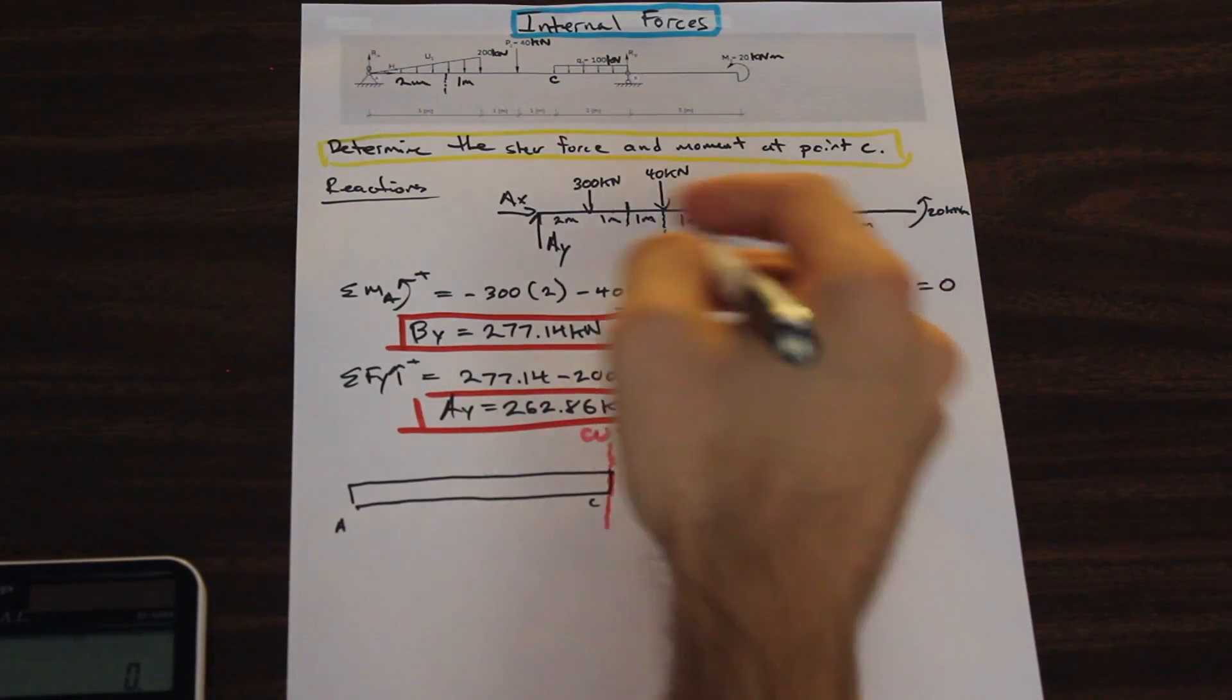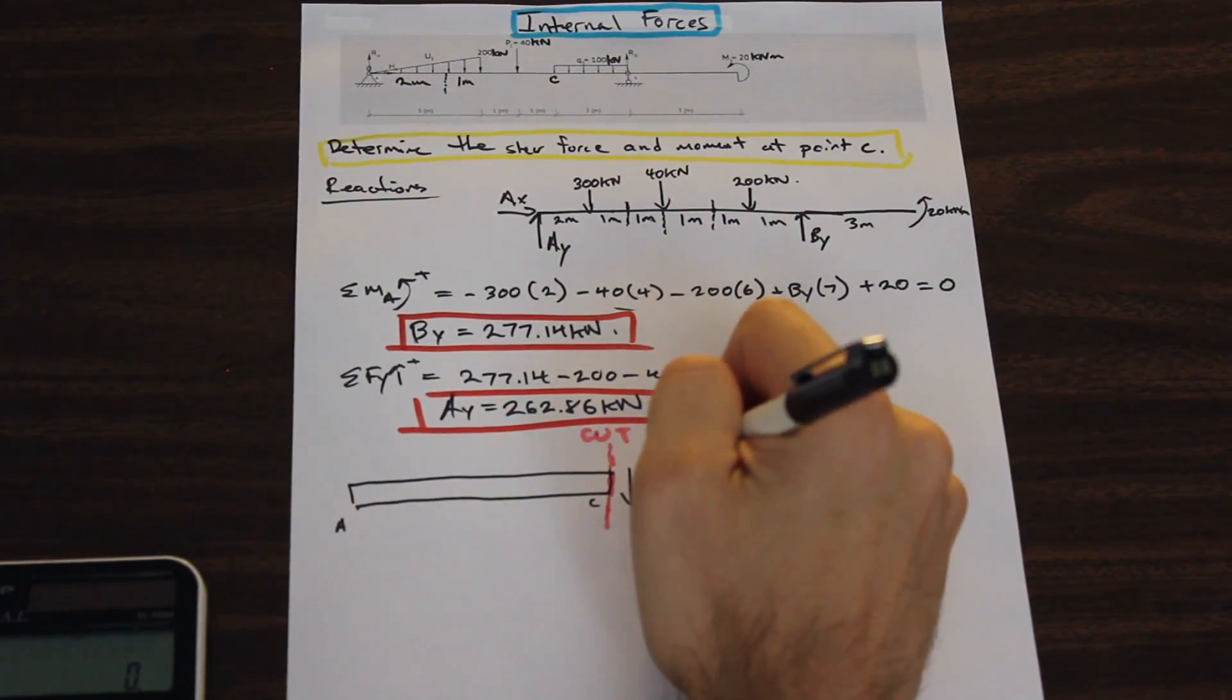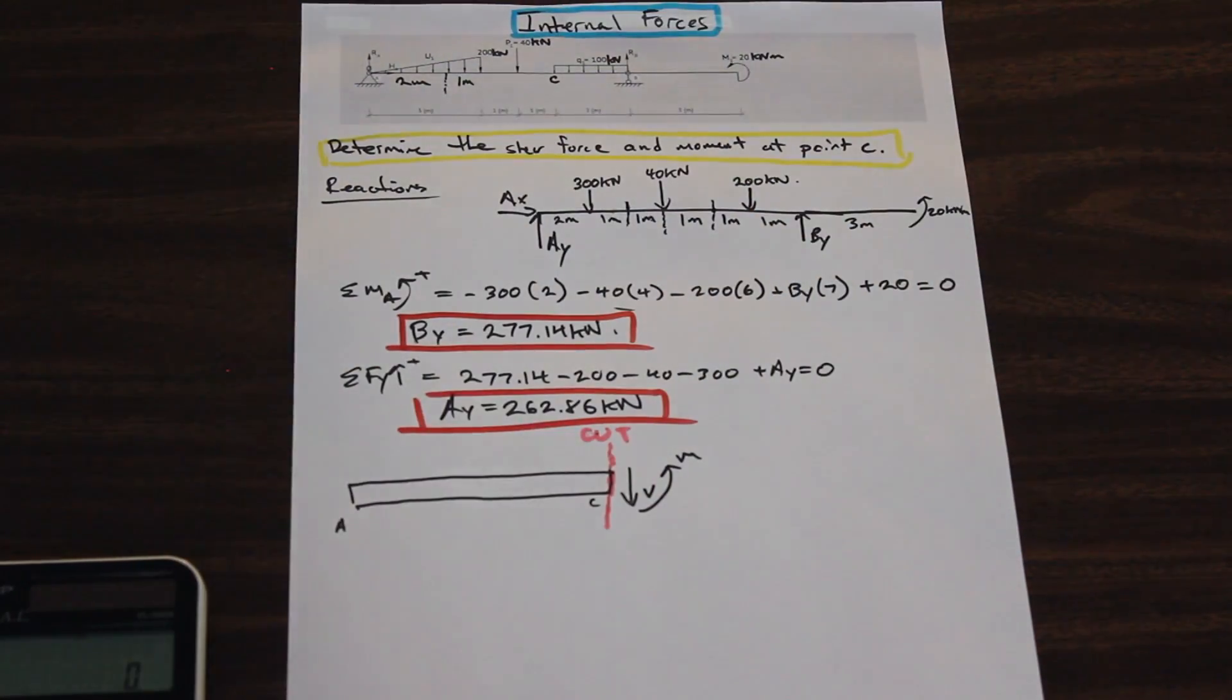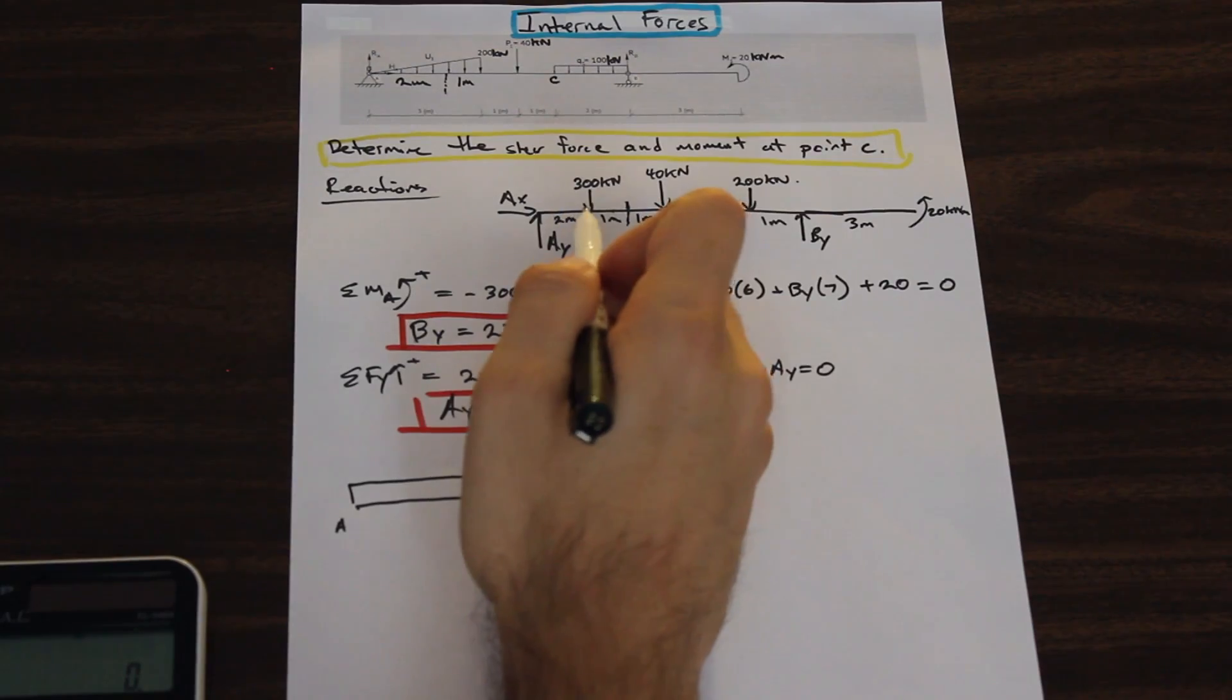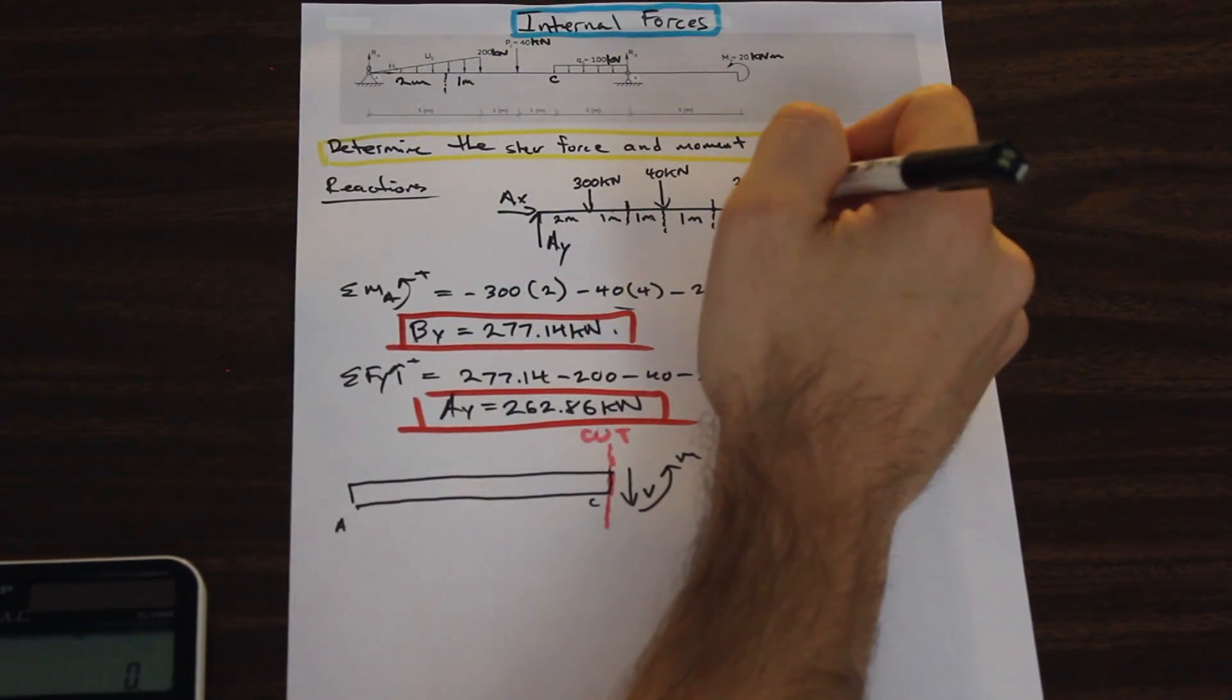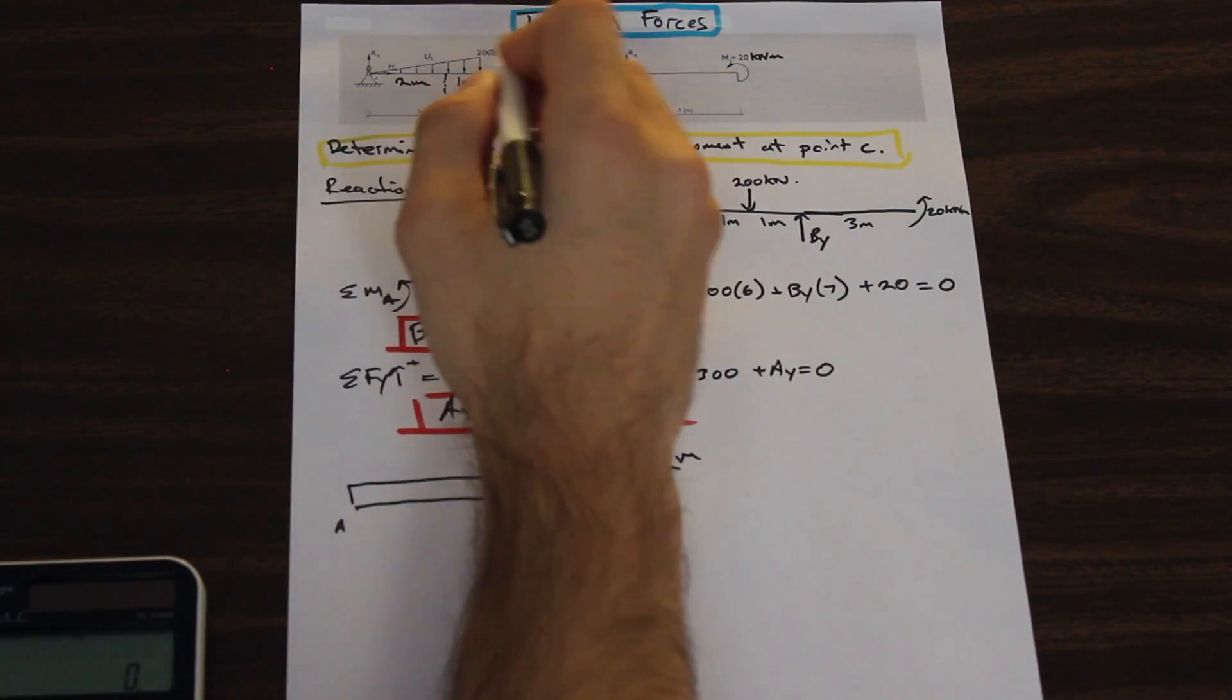All right, and let's draw our sign convention for our cuts. Our internal forces are acting in these directions here. So what do we have? We just need to translate these forces that we had up to point C. So up to point C, we had the triangular force here. That was acting 300 kilonewton down.